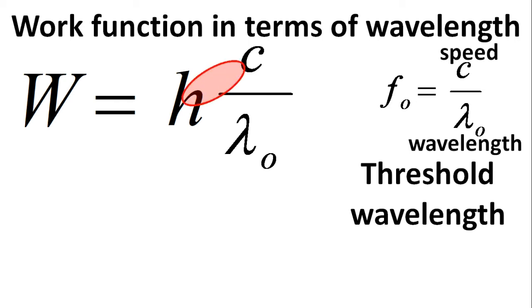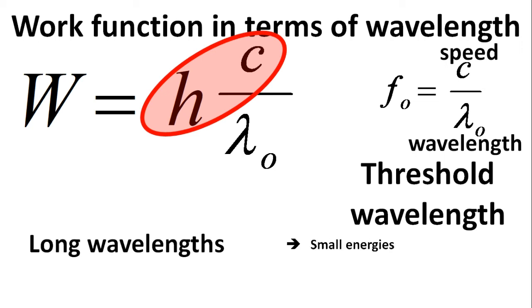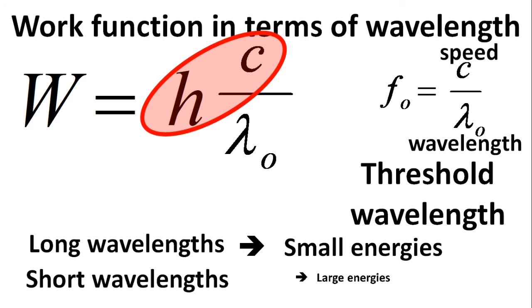Since h and c are constants, you can see that work function and lambda are inversely related. That's true. Energy and wavelength are inversely related. Long wavelengths mean small energies, while short wavelengths mean large energies. That's right. The wavelength should therefore be short so that the wave can have enough energy to eject electrons from a metal surface. If the wavelength exceeds a certain amount, then the photon energy will not be enough to eject electrons from the metal surface.